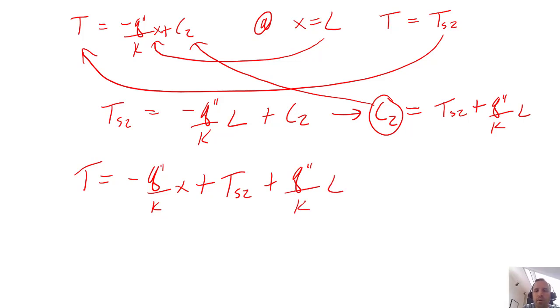So we get T is equal to minus q double prime over k times x plus T_s2 plus q double prime over k times L. And we can actually rearrange that equation to just make it look a little prettier. So our temperature as a function of x is going to be equal to T_s2 plus q double prime over k multiplied by L minus x. So this is actually the equation of a line.